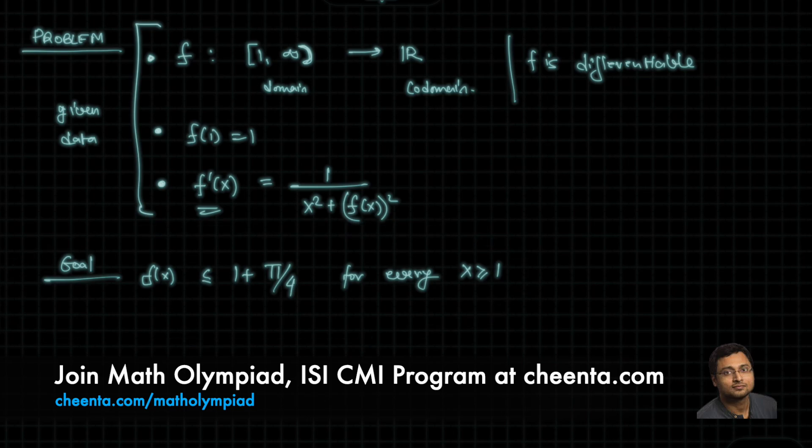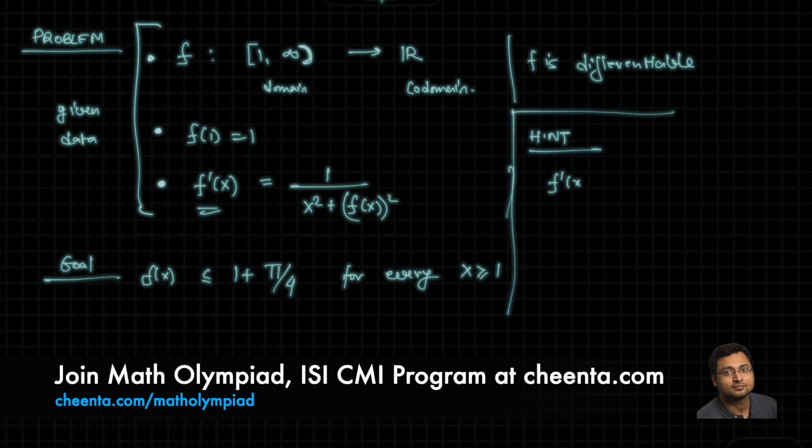So, can you give it a try by pausing the video? I will give you one hint so that you can try the problem on your own. The hint is this: notice that f prime of x is equal to 1 over x square plus f of x square.